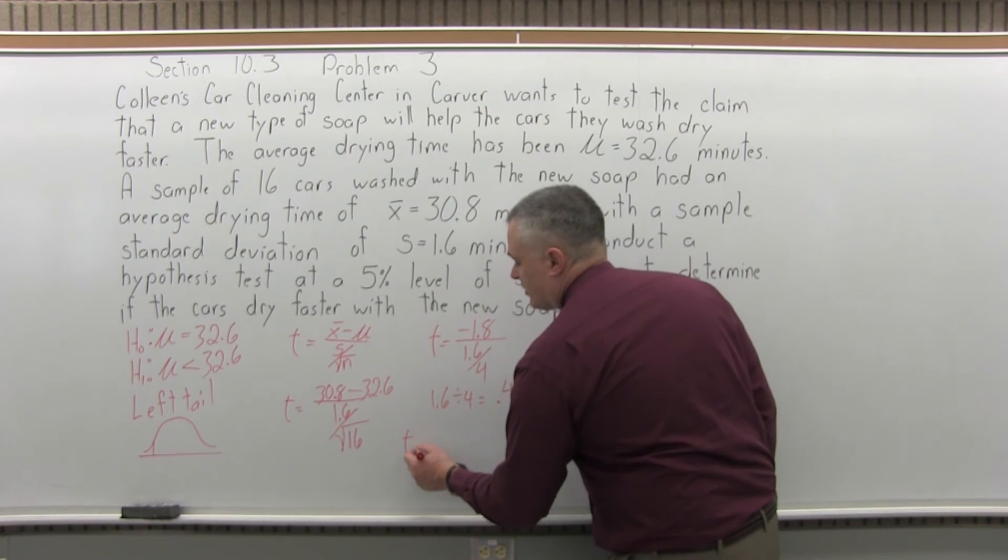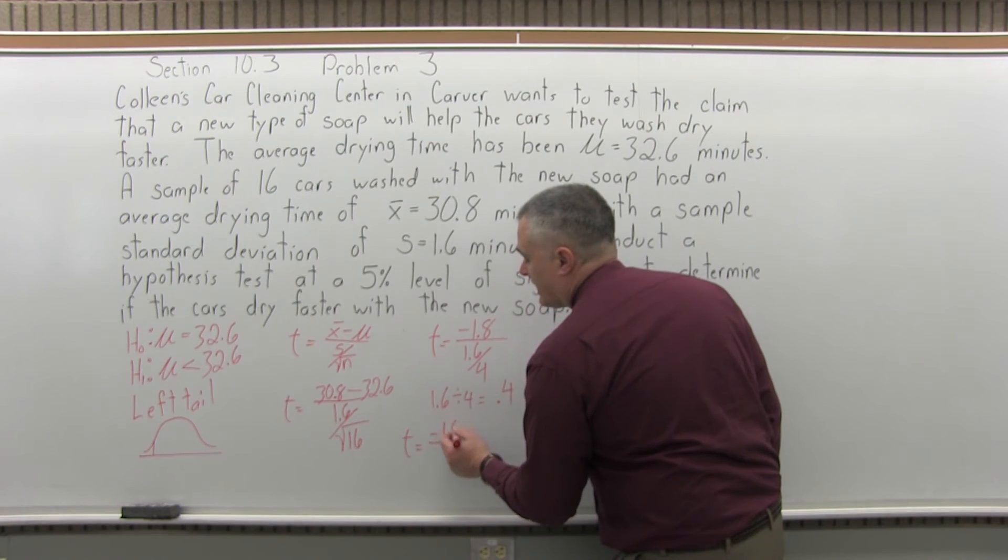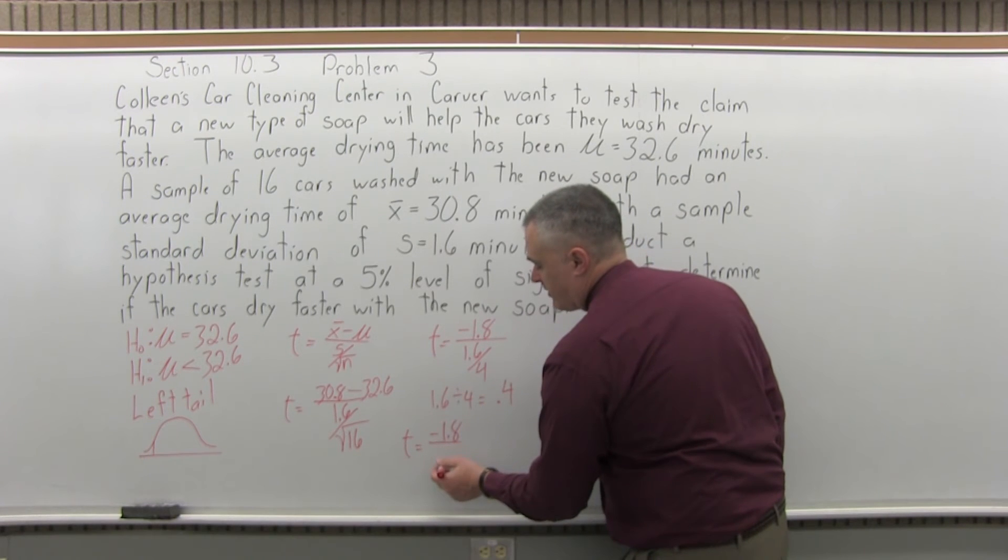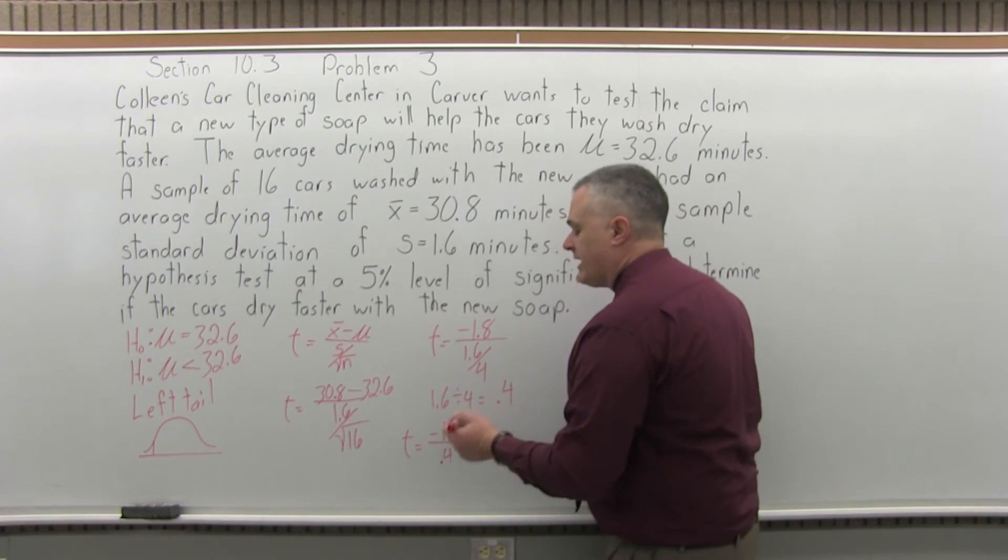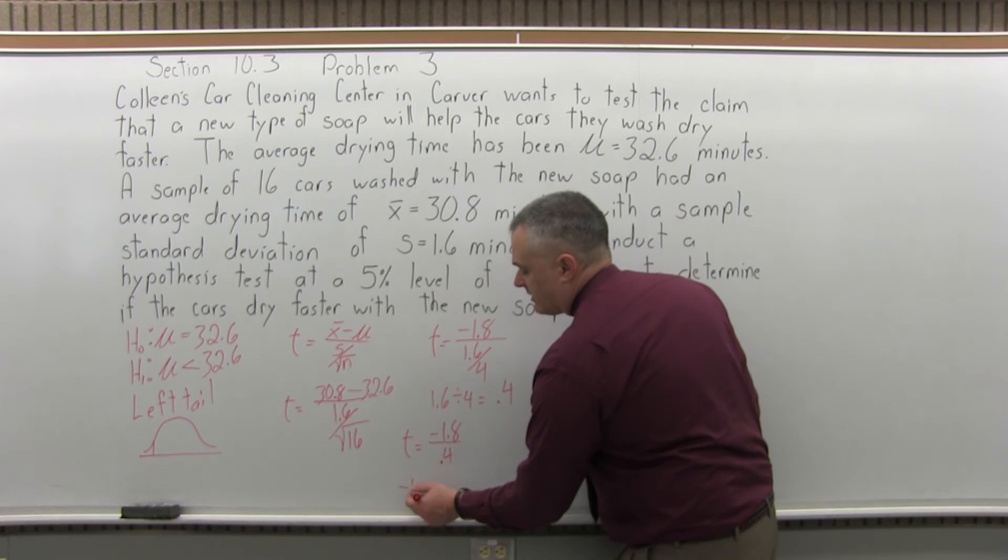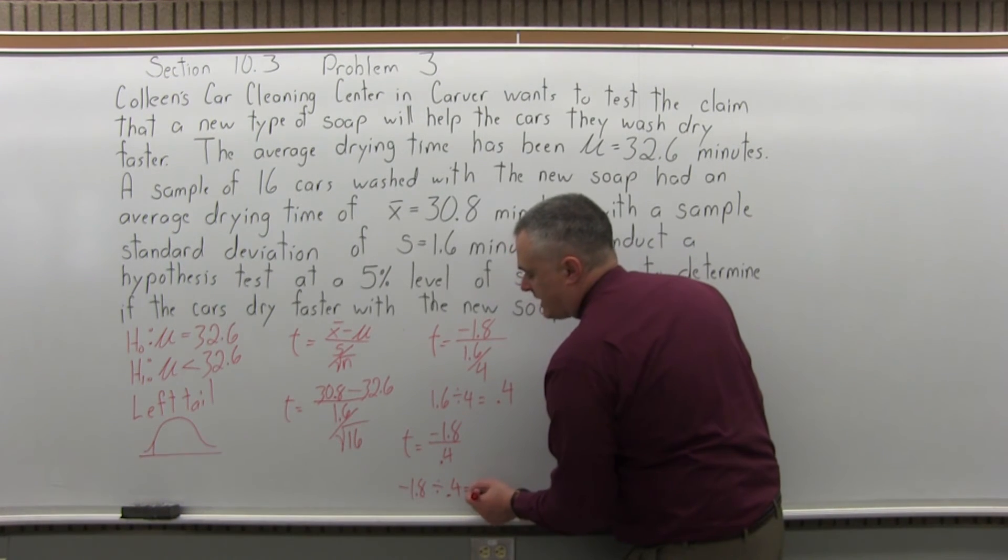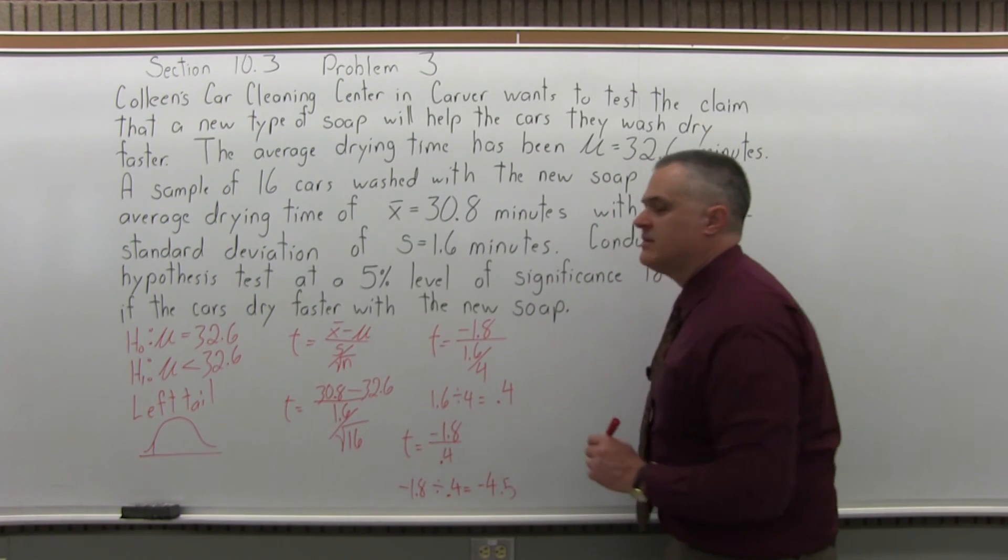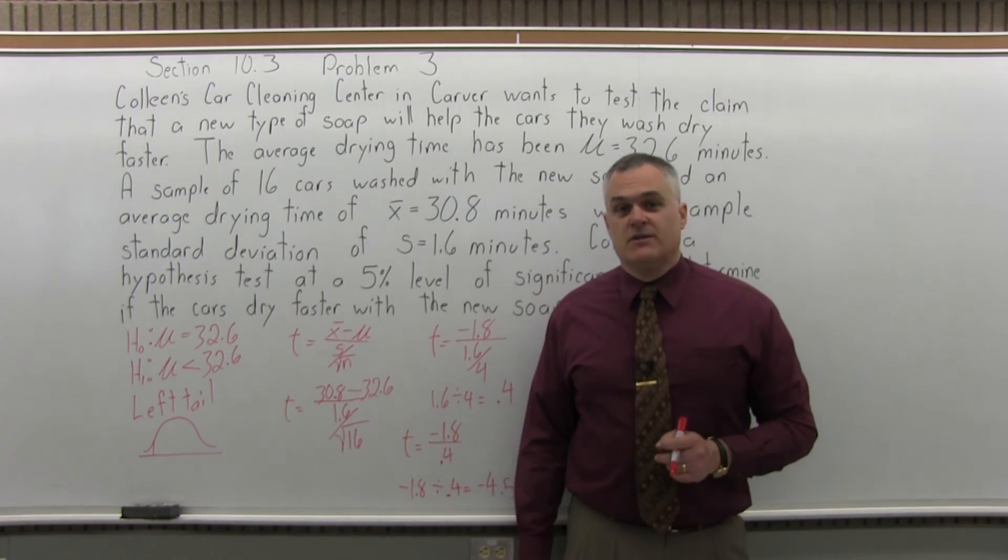So, now the computation I have to do boils down to negative 1.8, don't forget the negative, over 0.4. And again, that you may or may not see without your calculator. So, just run it through. Negative 1.8 divided by 0.4 equals, and the calculator will tell you it's negative 4.5. That's our value for T. So, now the next step, step 5,